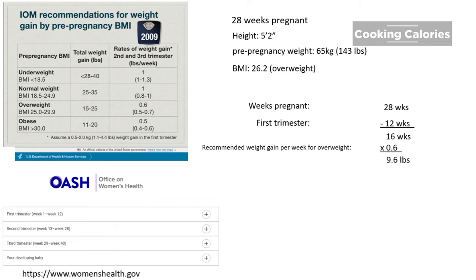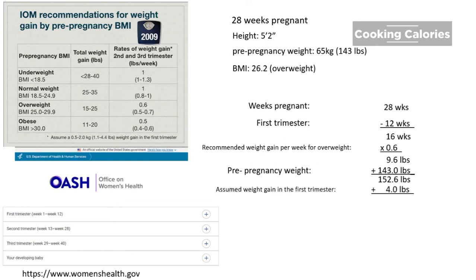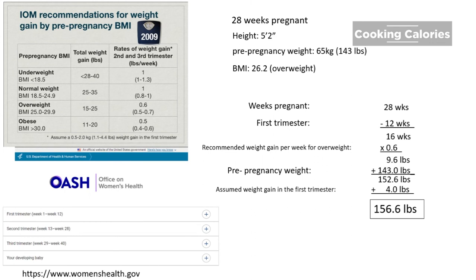Then we will add this to her pre-pregnancy weight, which is 143 pounds. So 143 pounds plus 9.6 equals 152.6 pounds. We can also add another 4 pounds as an assumed weight gain in the first trimester. So 152.6 pounds plus 4 pounds equals 156.6 pounds, which means that at 28 weeks of pregnancy, this pregnant woman should weigh around 156.6 pounds.